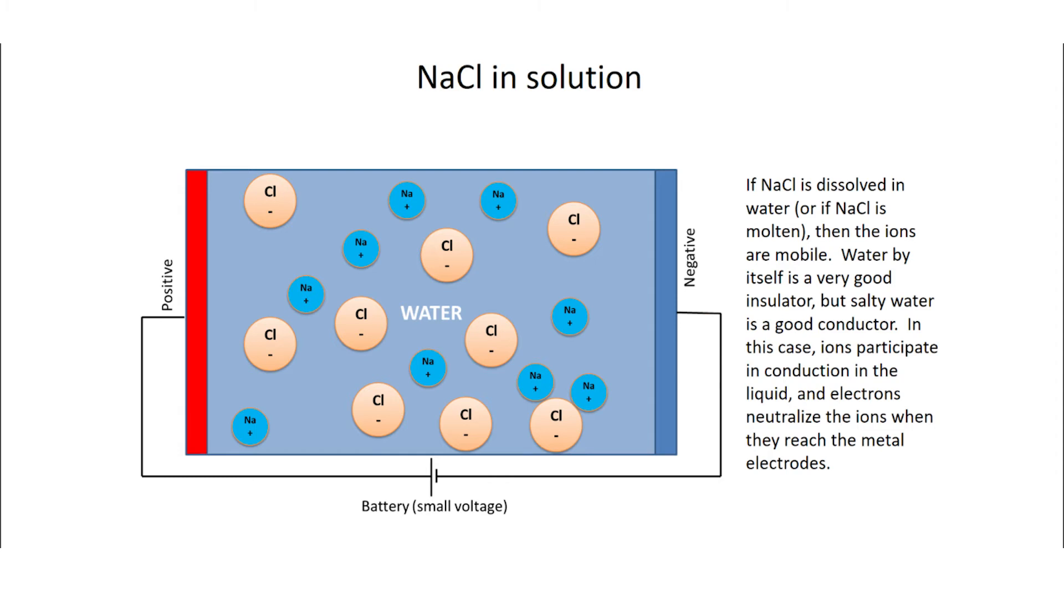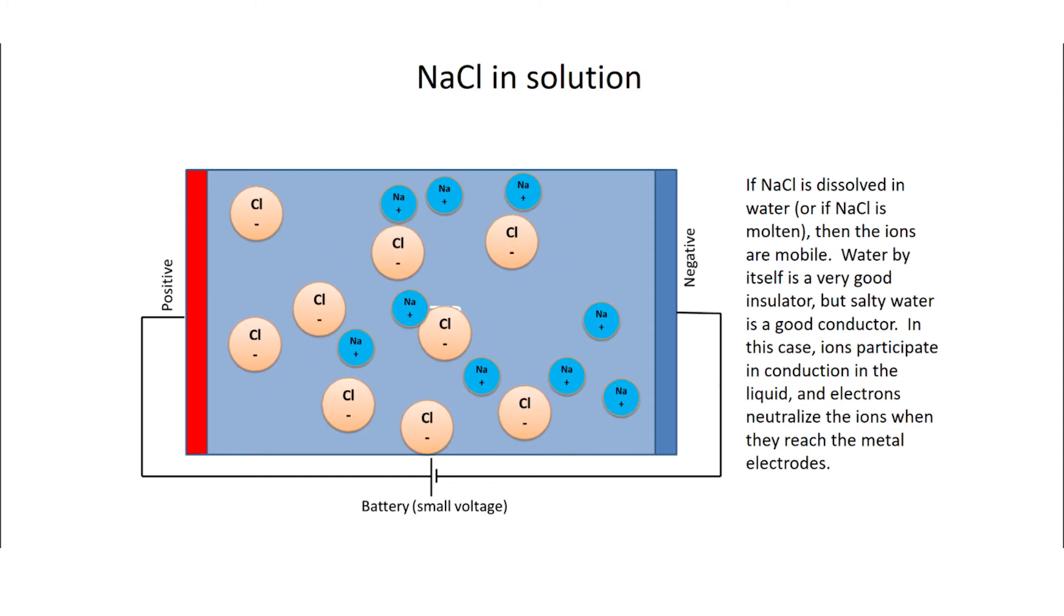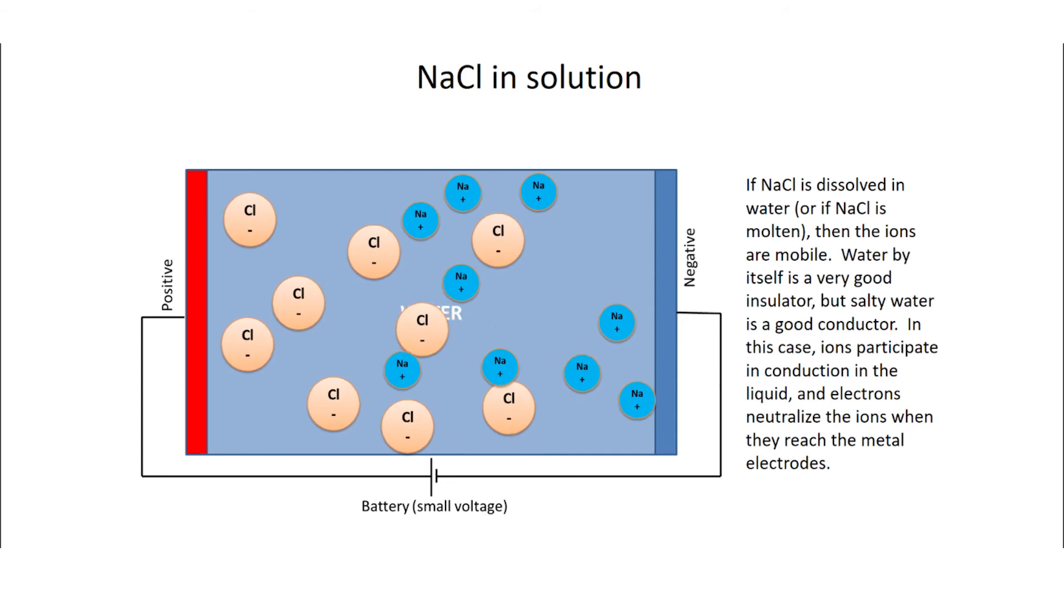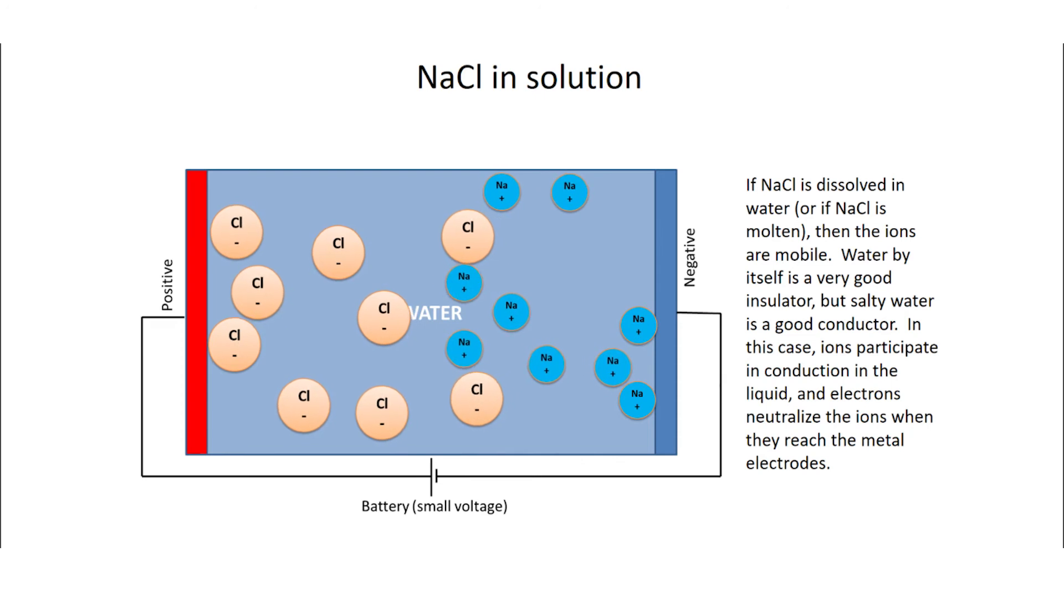Since they're ionized, if we put a voltage across the solution, the ions are now free to move around. And in this case, it's not so much the individual electrons that are conducting the electricity, but rather the ions. This is the example that I was referring to at the beginning, where some of the charge carriers are positive. In this case, positive sodium ions travel towards the negative electrode. The chlorine ions, on the other hand, tend to drift towards the positive electrode.